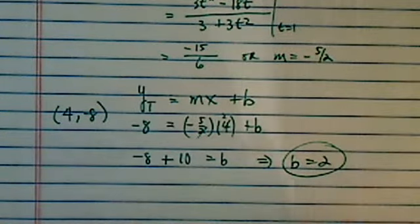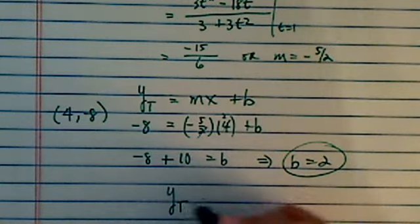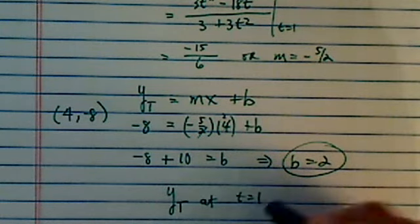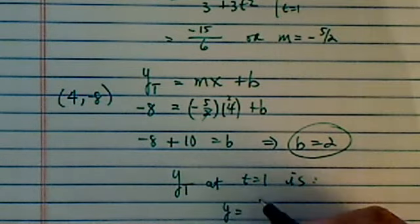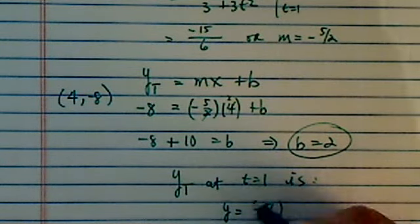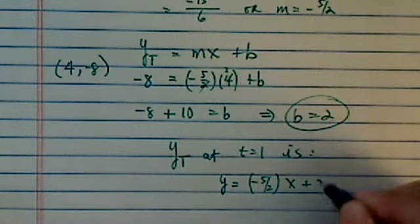Now I have everything I need. The line of tangent at t equal to 1 is this. y is equal to minus 5 over 2, x plus 2.